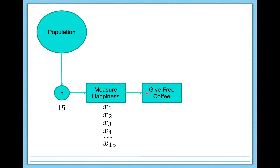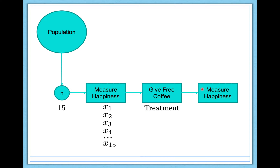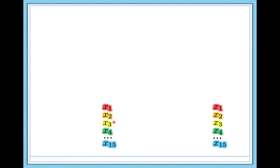Then we give each participant a free cup of coffee — that's our treatment, what we want to know if it makes a difference. And then finally we measure happiness again and get another set of 15 scores, one happiness score for each participant. We call this post-treatment happiness versus baseline happiness, which is before-treatment. Now let's talk about how we use these before and after scores to calculate the dependent samples t-test.